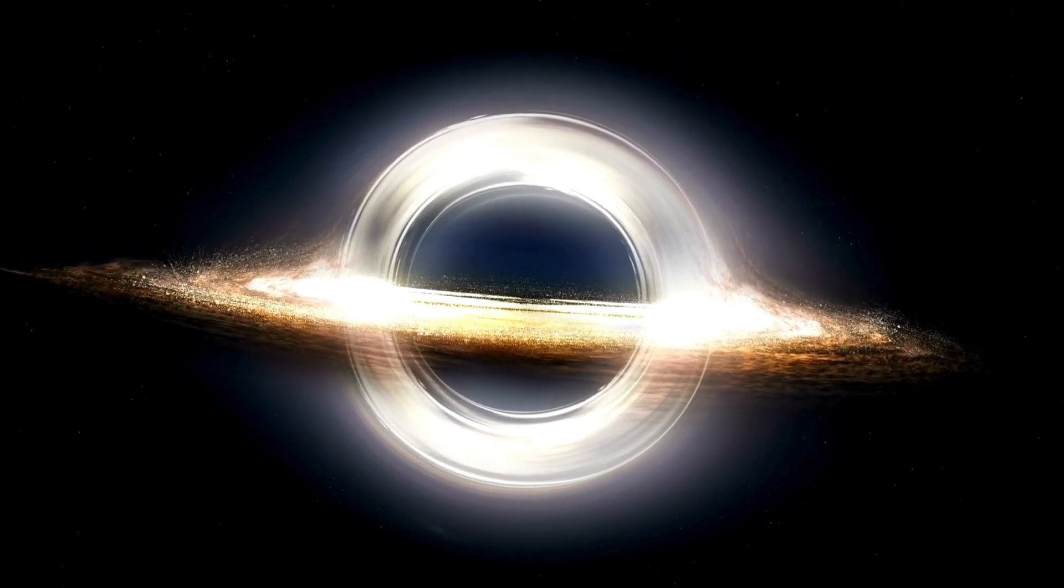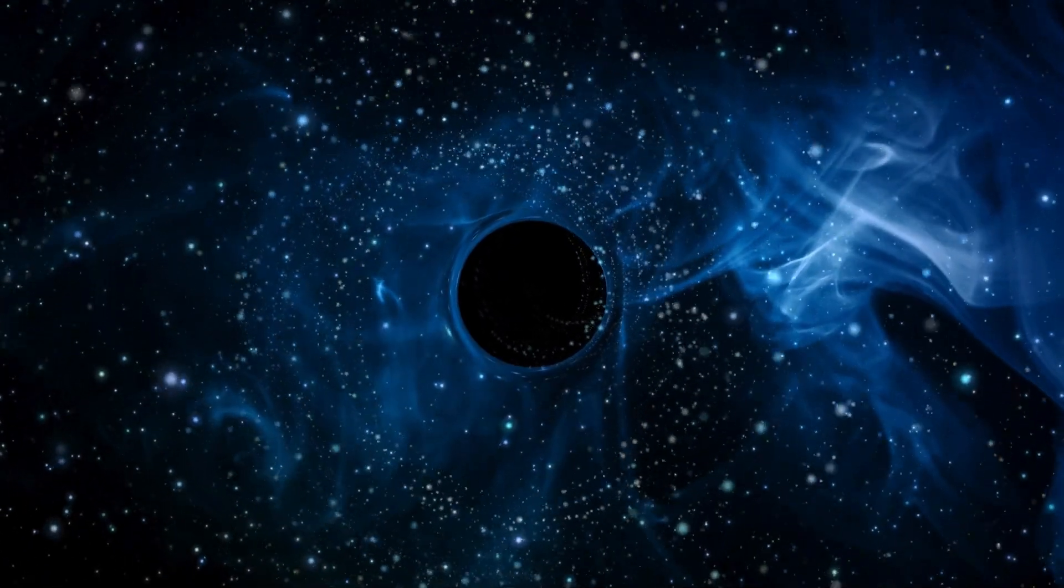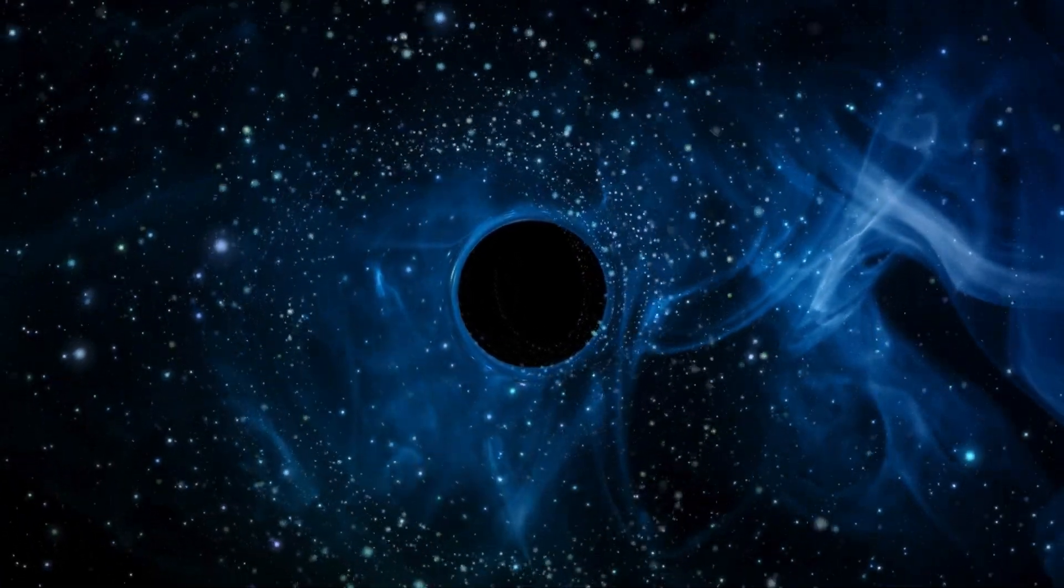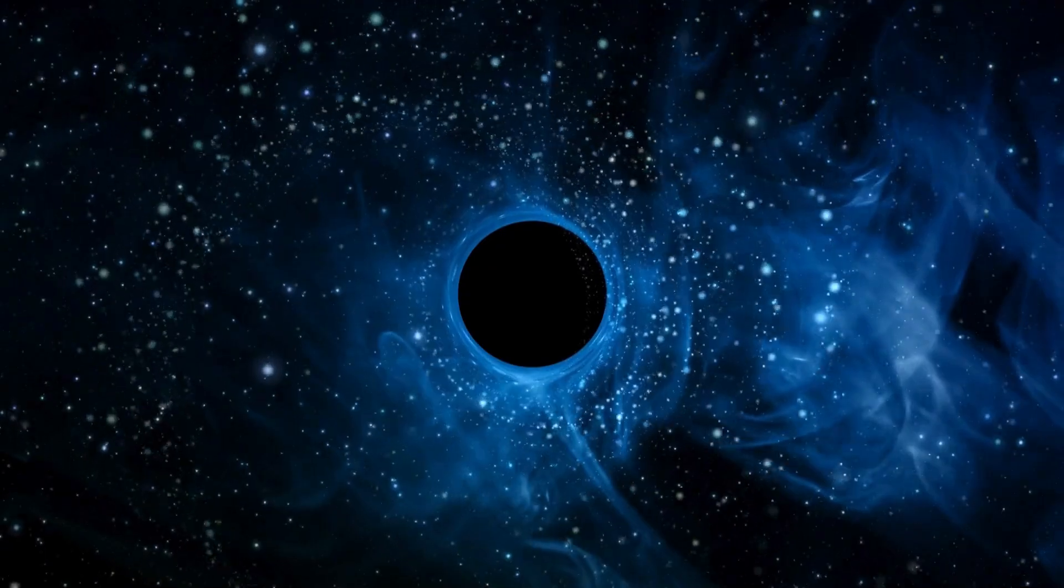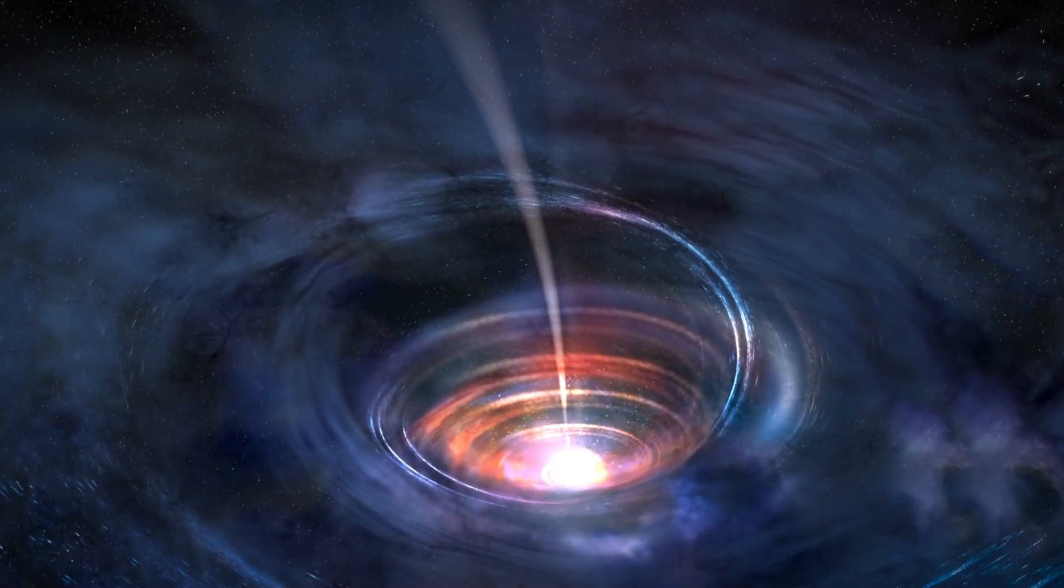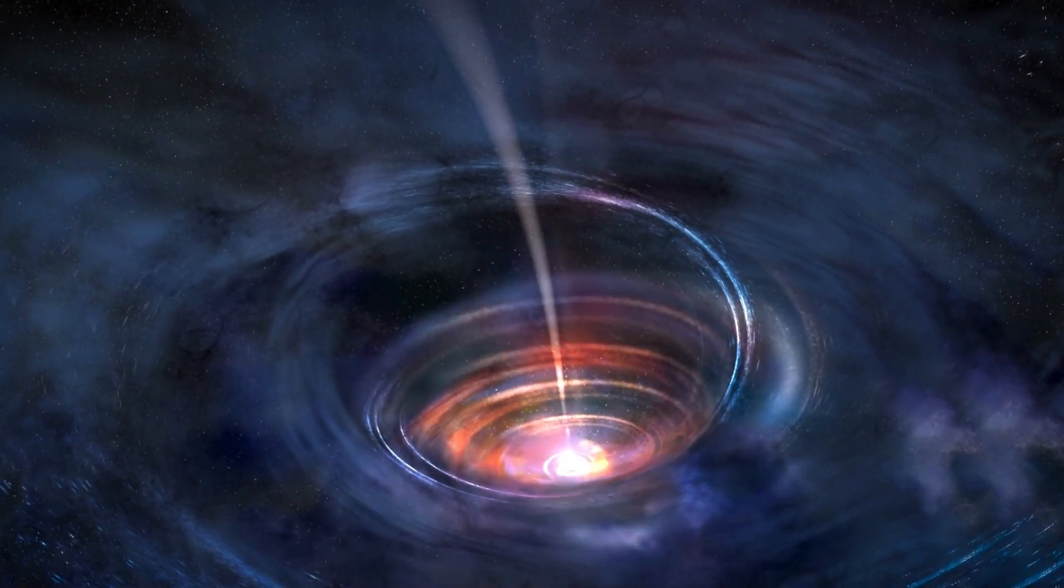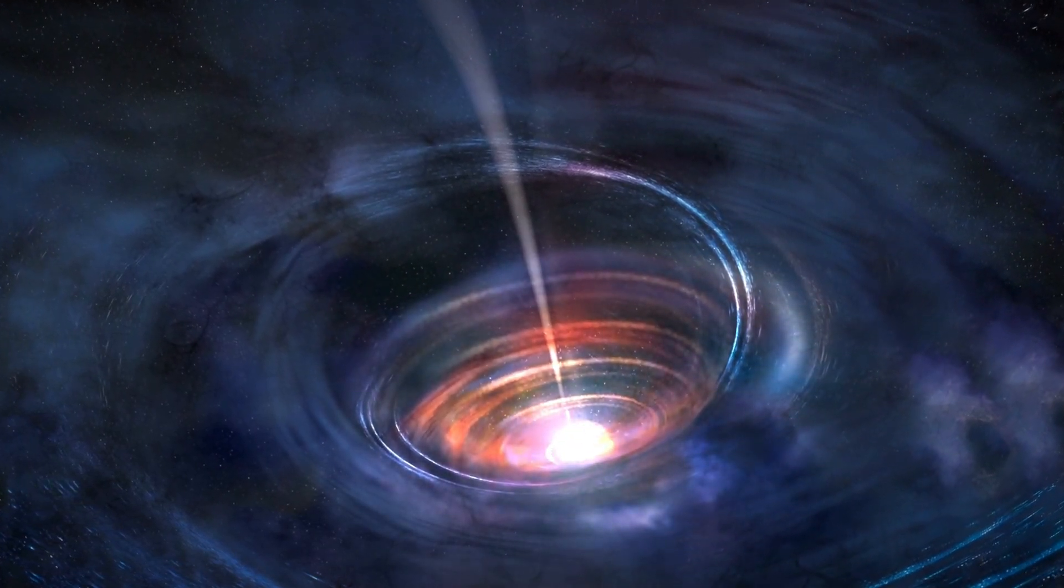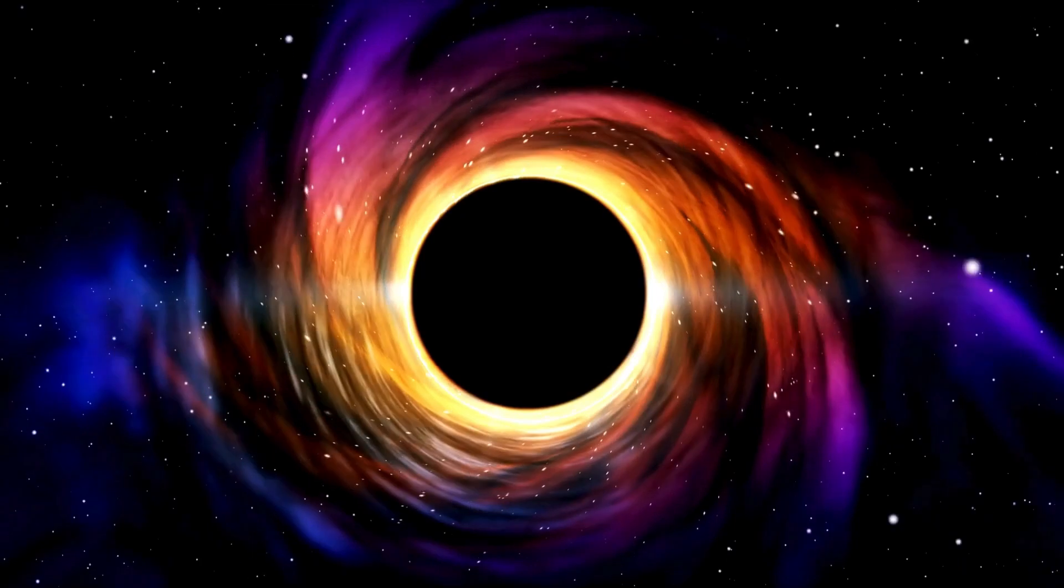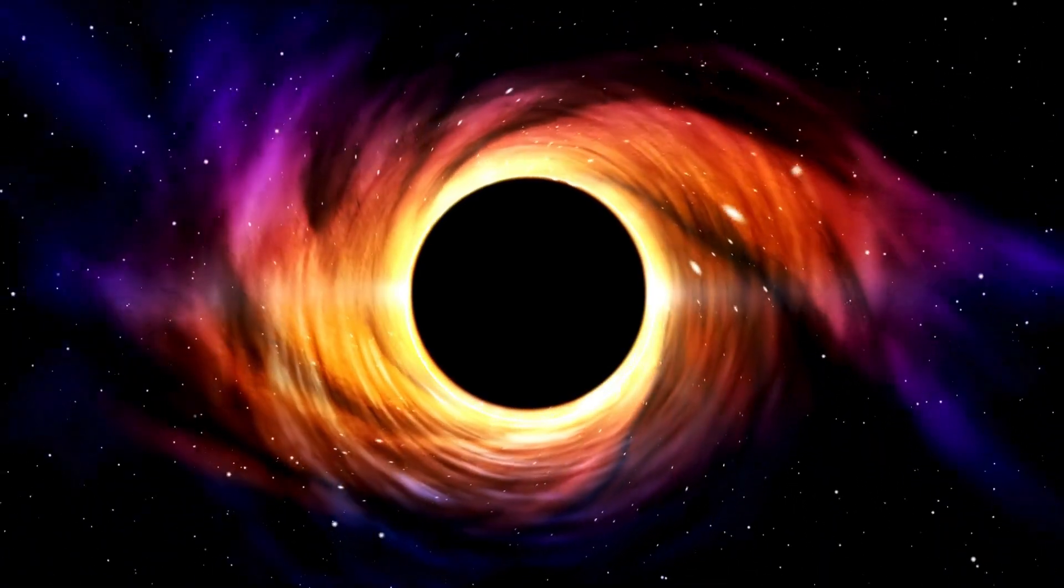Sometimes, when two smaller black holes collide, they combine to form an even bigger and scarier black hole. And if a black hole teams up with a neutron star, they create a colossal nightmare that defies comprehension. Scientists have been grappling with the scale of these cosmic phenomena for years. Black holes come in two sizes: huge and small. There's a sinister mystery surrounding them that we can't seem to unravel.